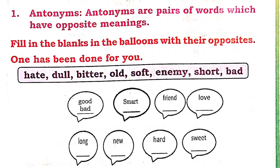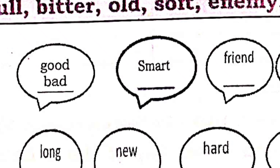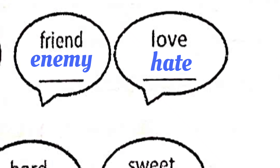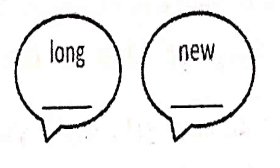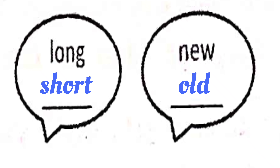Fill in the balloons with their opposites. Good — Bad. Smart — Dull. Friend — Enemy. Love — Hate. Hard — Soft. Sweet — Bitter. Long — Short. New — Old.